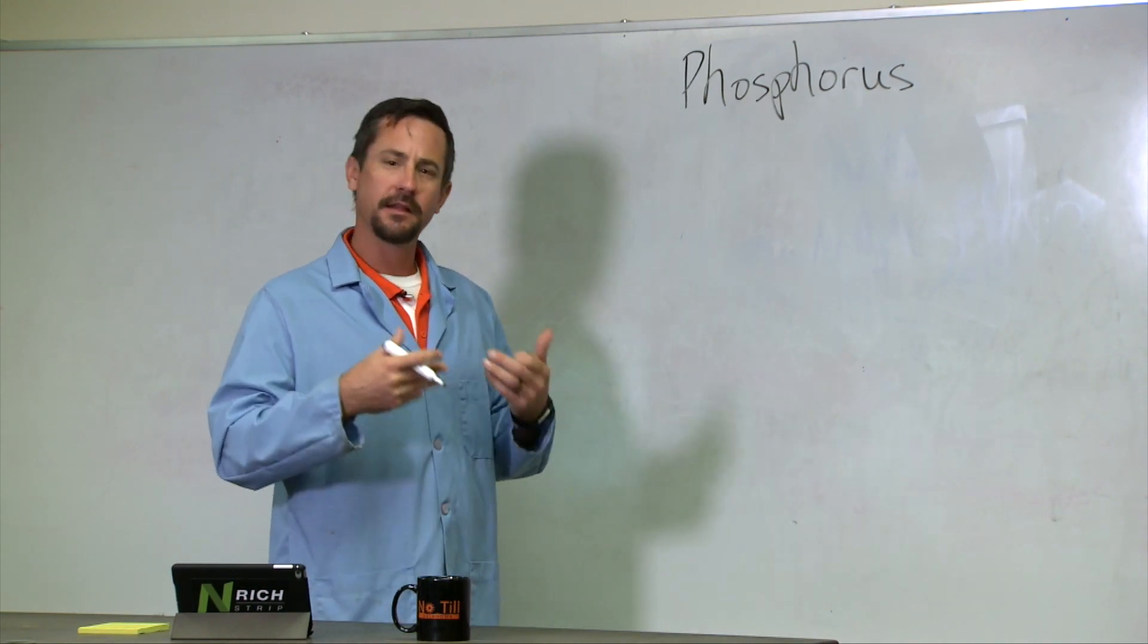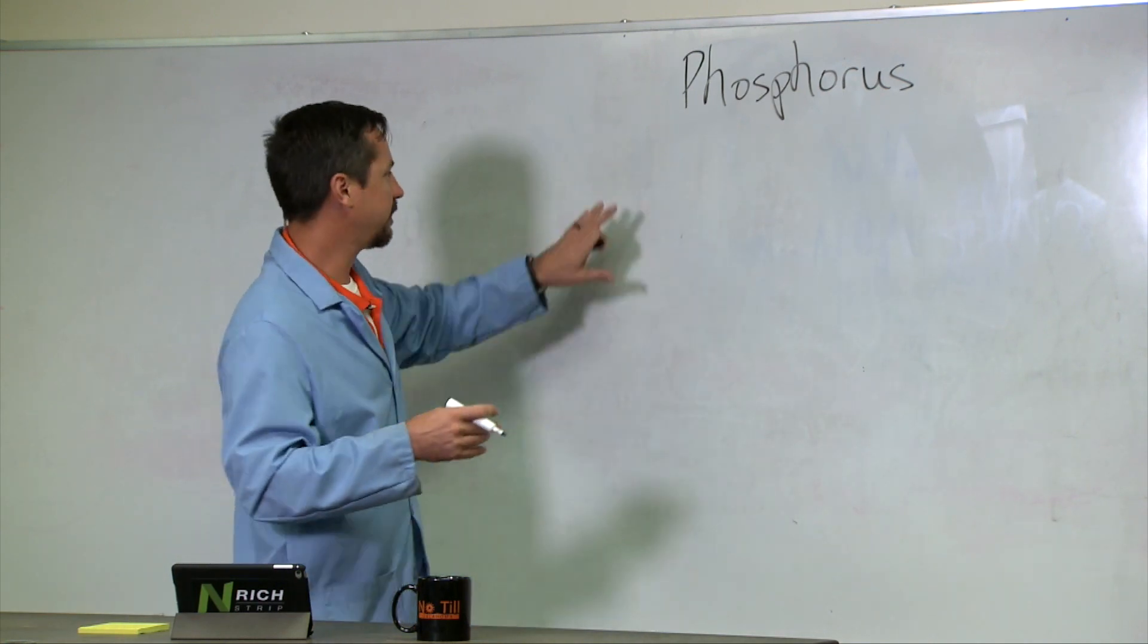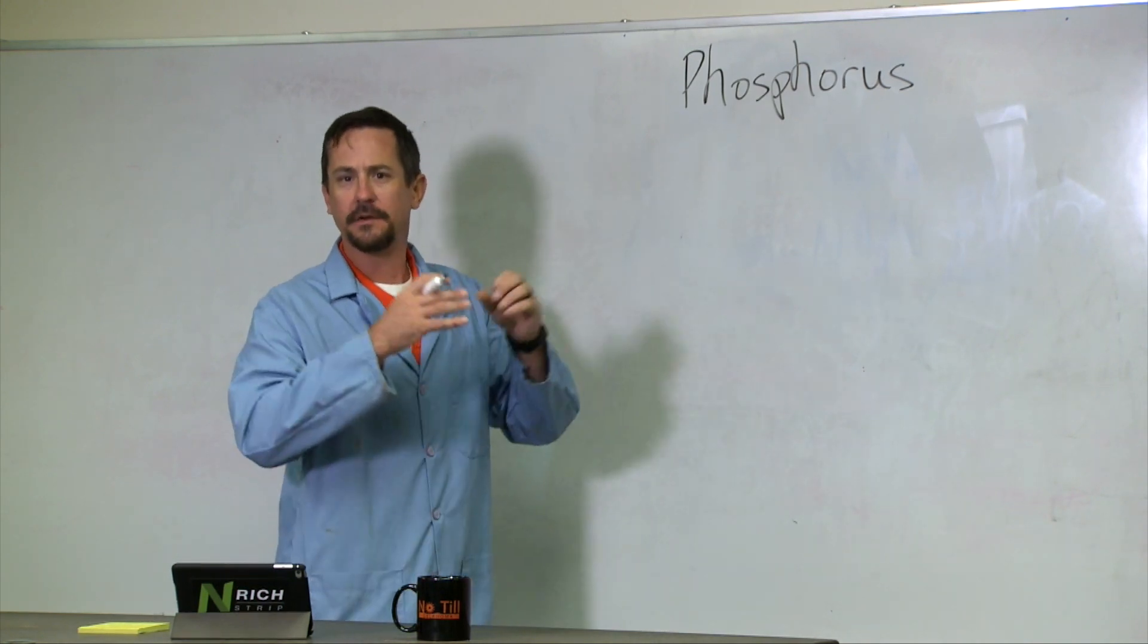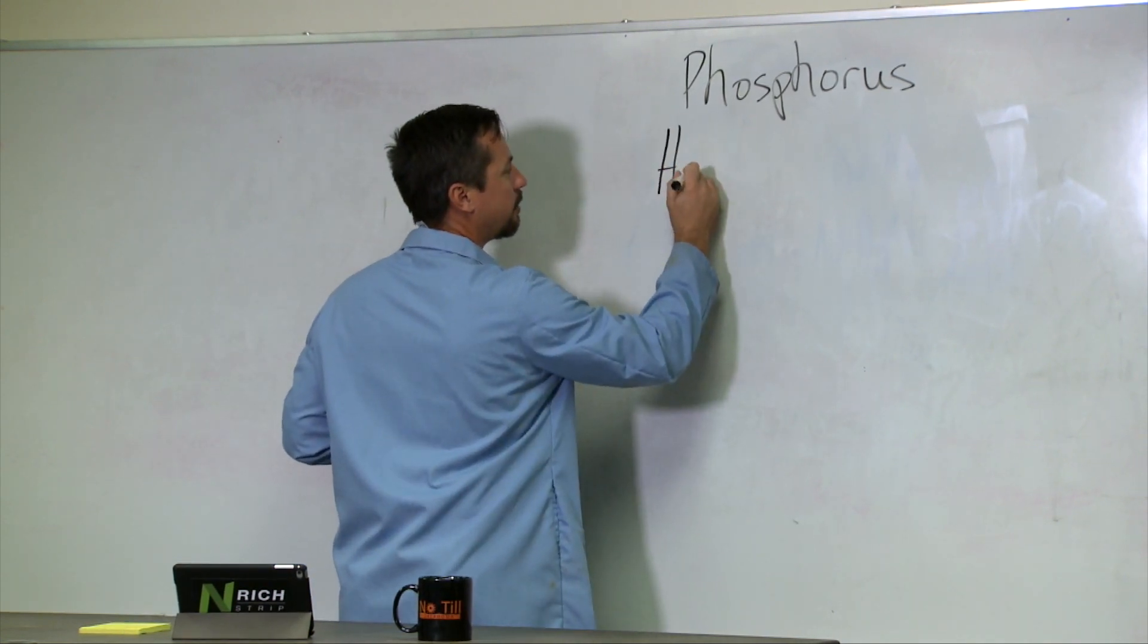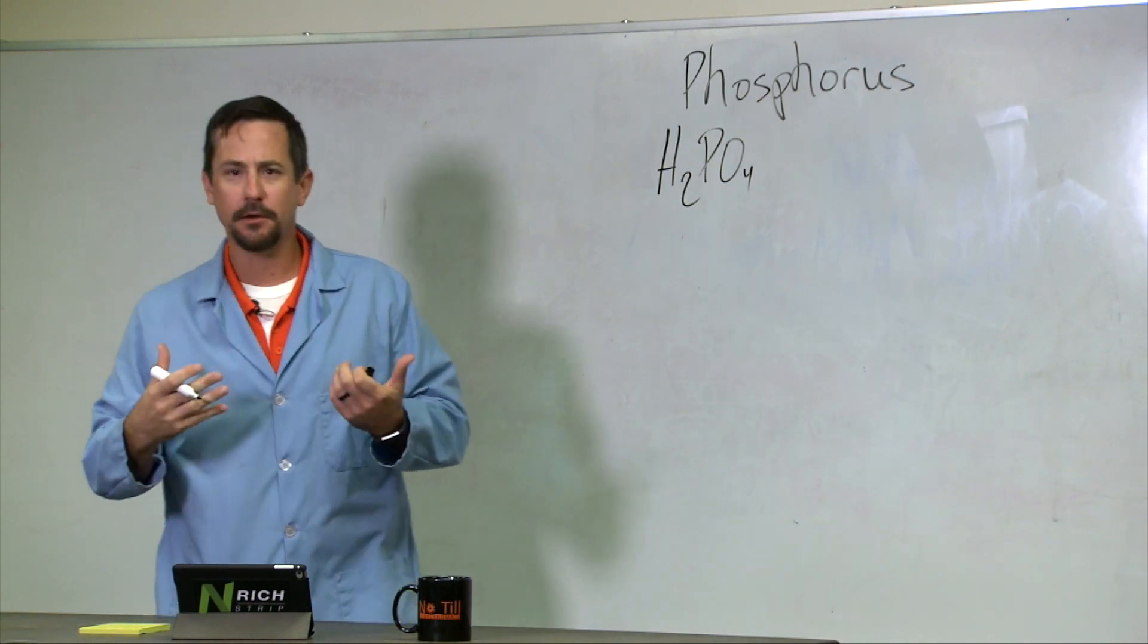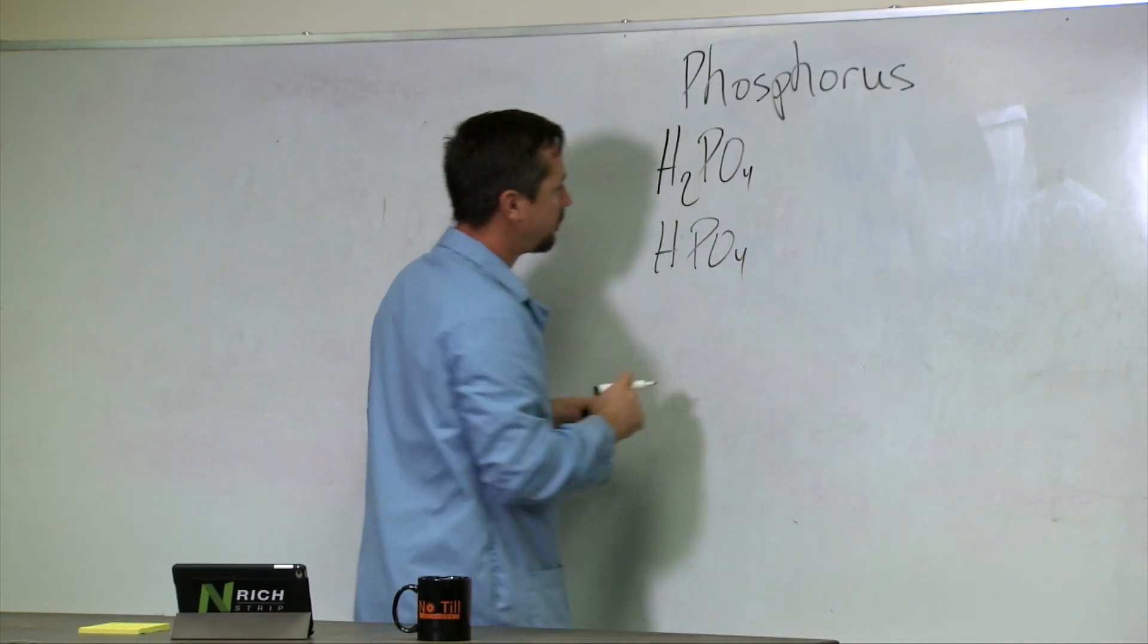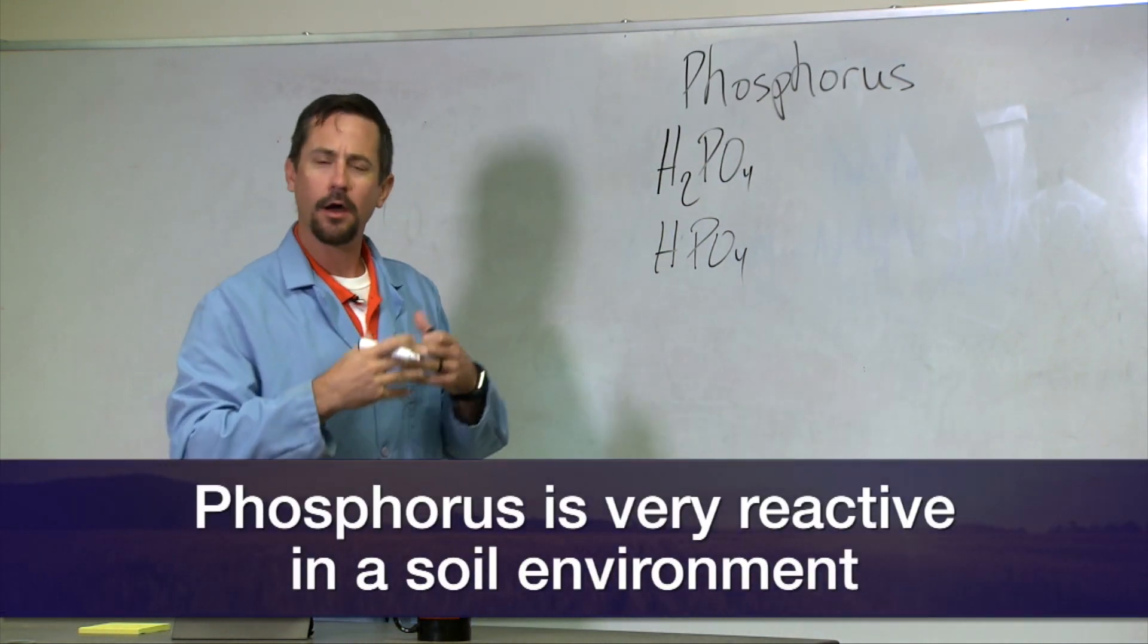And 11-52-0, which is monoammonium phosphate. These phosphates have a single calcium on a phosphate that's easily torn apart and made plant-available. But as soon as we get it into the soil system, we start having forms like H2PO4 and HPO4, which are very chemically reactive.